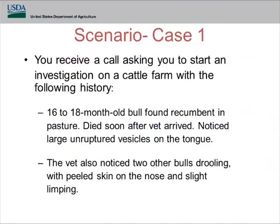Moving to vesicular FAD investigations — whether a cow or a pig, if it has lesions on the coronary bands or in the mouth, you should be thinking this could be foot and mouth. A scenario: you receive a call about a cattle farm where a 16–18-month-old bull was found recumbent in the pasture and died. They noticed large unruptured vesicles on the tongue. Two other bulls were drooling with peeled skin on the nose and slight limping. This is a vesicular case — the animals are lame, drooling, and have sores in their mouth.